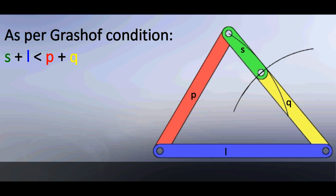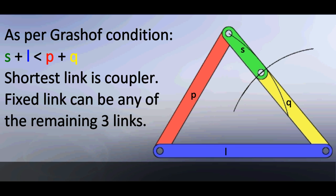For double rocker configuration, shortest link is the coupler. Fixed link can be any of the remaining three links.